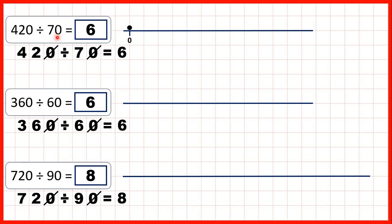So we can count on in steps of 70 until we reach 420. We have 70, 140, 210, 280, 350 and then the sixth multiple of 70 is 420. And that's why 420 divided by 70 is 6.